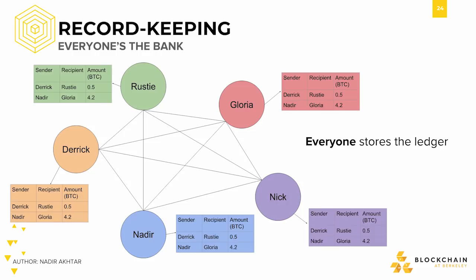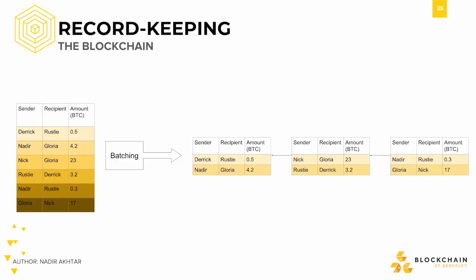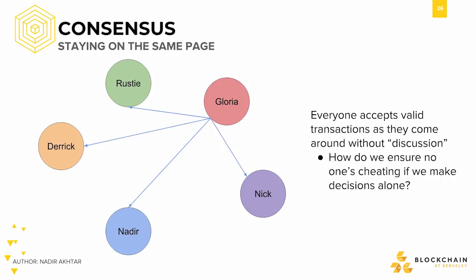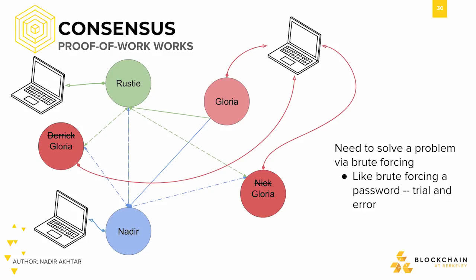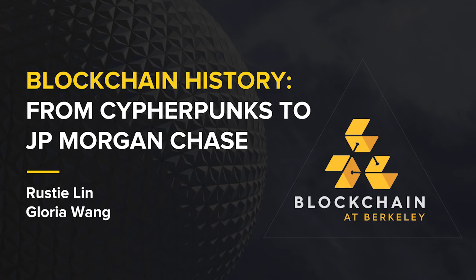We also demonstrated what the blockchain structure looks like and why it was designed that way. Finally, we learned consensus by iterating over various forms of consensus until we reached proof-of-work, the form of consensus used by Bitcoin. It prevents any one person from voting more than once by tying their voting power to some scarce resource — in this case, computational power.